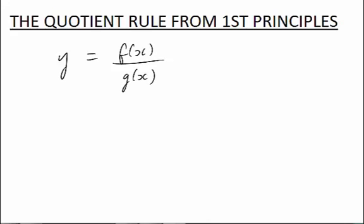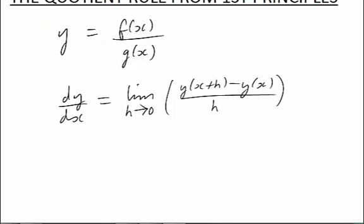Here we go. So remember we take the limit as the run goes to zero of the rise over the run for the function y. Then we substitute that special structure, f of x over g of x, into that formula.